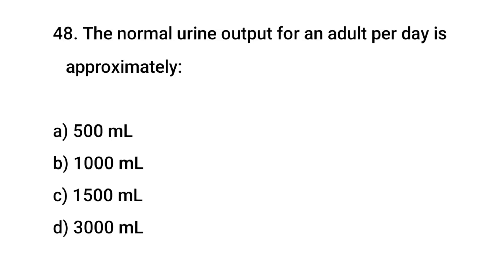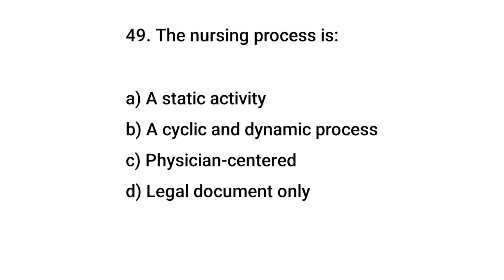Question No. 48. The normal urine output for an adult for a day is approximately? The right answer is C. 1500 milliliters. Question No. 49. The nursing process is? The right answer is B. A cyclic and dynamic process.